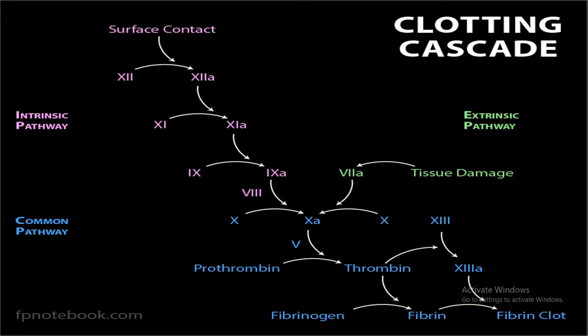The clotting cascade has two pathways: an intrinsic pathway and an extrinsic pathway, which converge into a common pathway. The intrinsic pathway starts from Factor 12, 12a, then 11, 10, and forms Factor 10a. The extrinsic pathway is triggered by tissue damage, starting from Factor 4 and then forming Factor 10a. Both fuse in the common pathway where Factor 10a, with the help of Factor 5, converts prothrombin to thrombin, and thrombin converts fibrinogen to fibrin, forming a clot. The most critical component is Factor 10a.